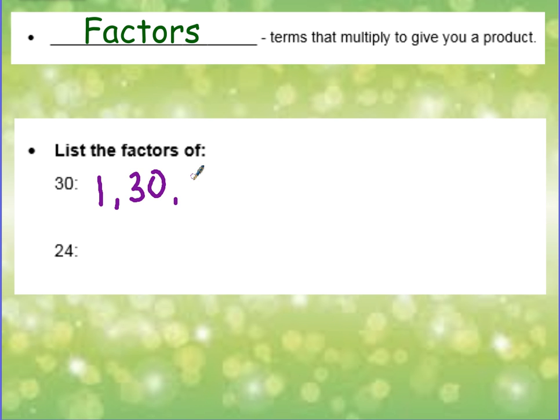We can also multiply 2 and 15. We can multiply 3 and 10. 4 cannot go into 30 evenly, but we can multiply by 5 and 6. These are all of the factors of 30, the numbers that multiply to give you a product of 30.